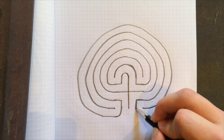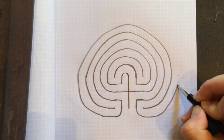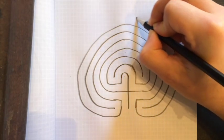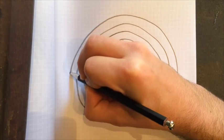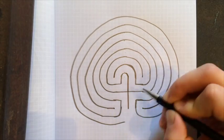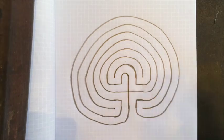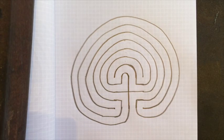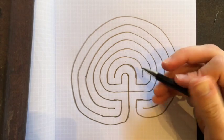And then lastly, down, around, up, over, one last time all the way, and bring it and connect it to the bottom of the plus sign. And that is the seventh circuit classical labyrinth.